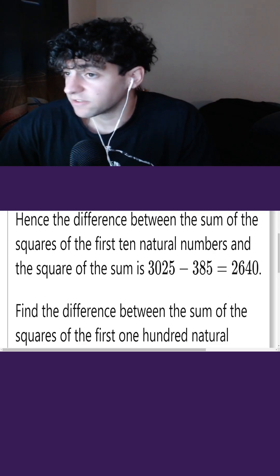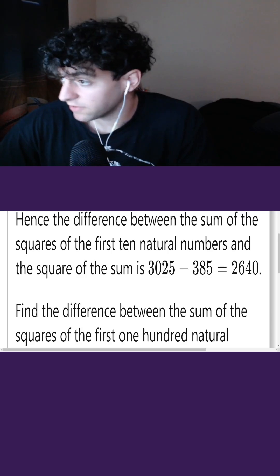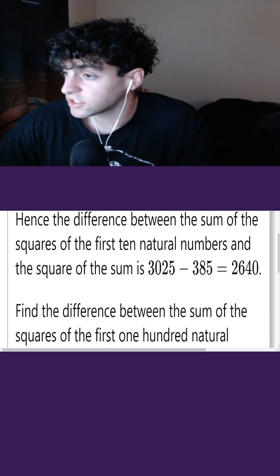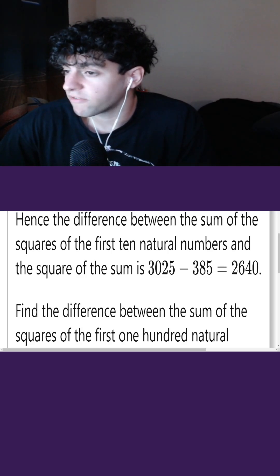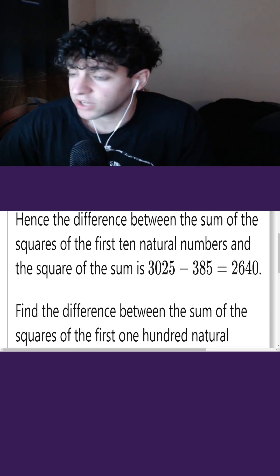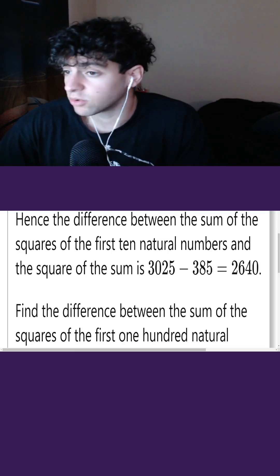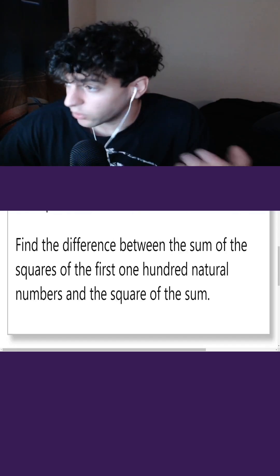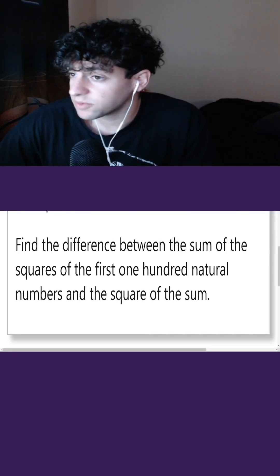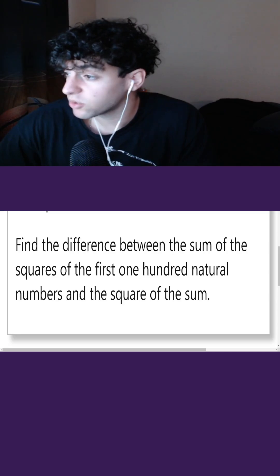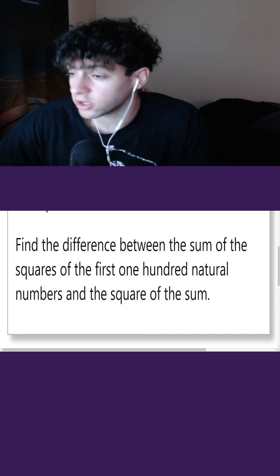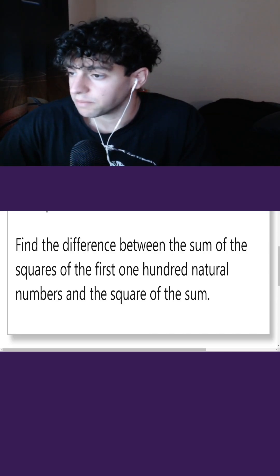The difference between the sum of squares and the square of the sum is 3025 minus 385, which equals 2640. We have to find the same difference for the first 100 natural numbers. This problem is straightforward, so let's get right into it.